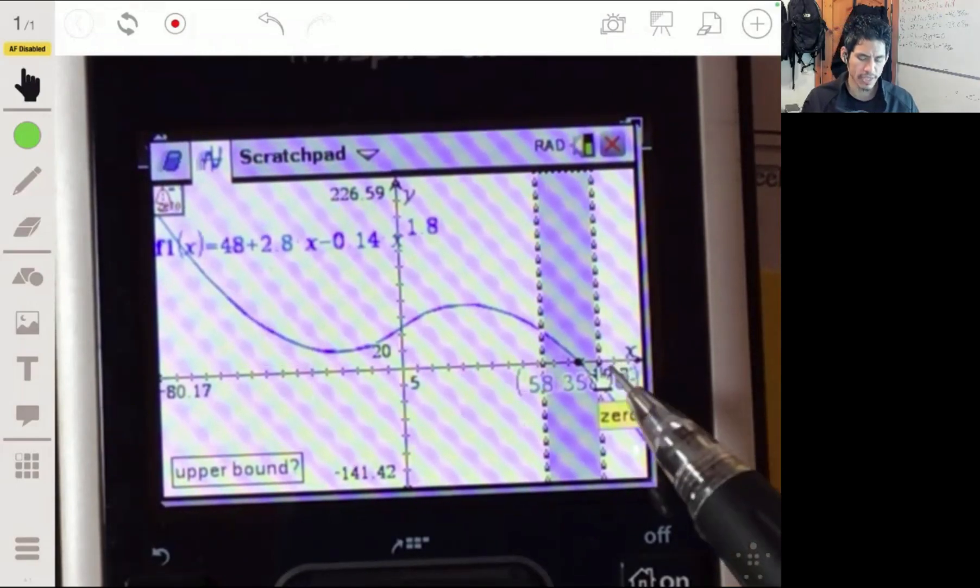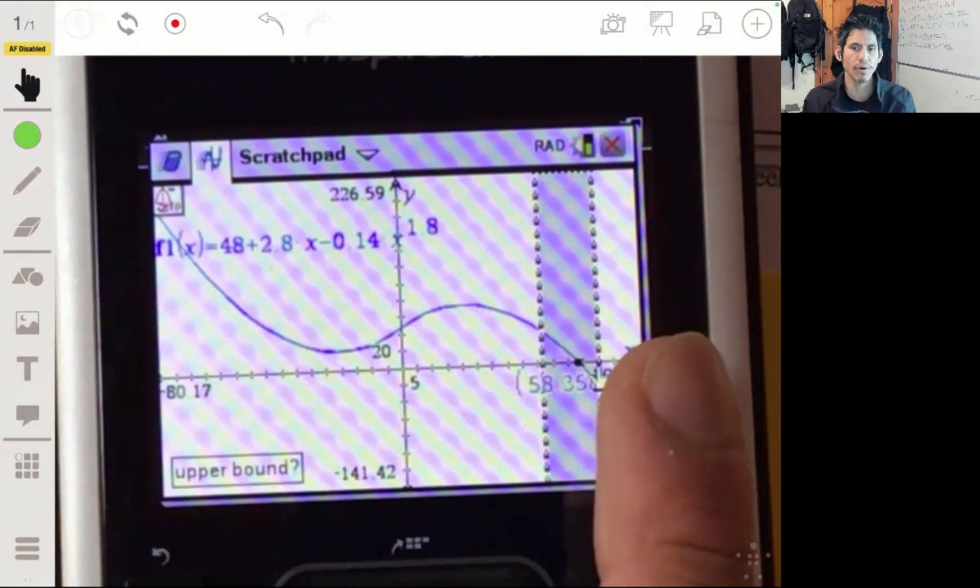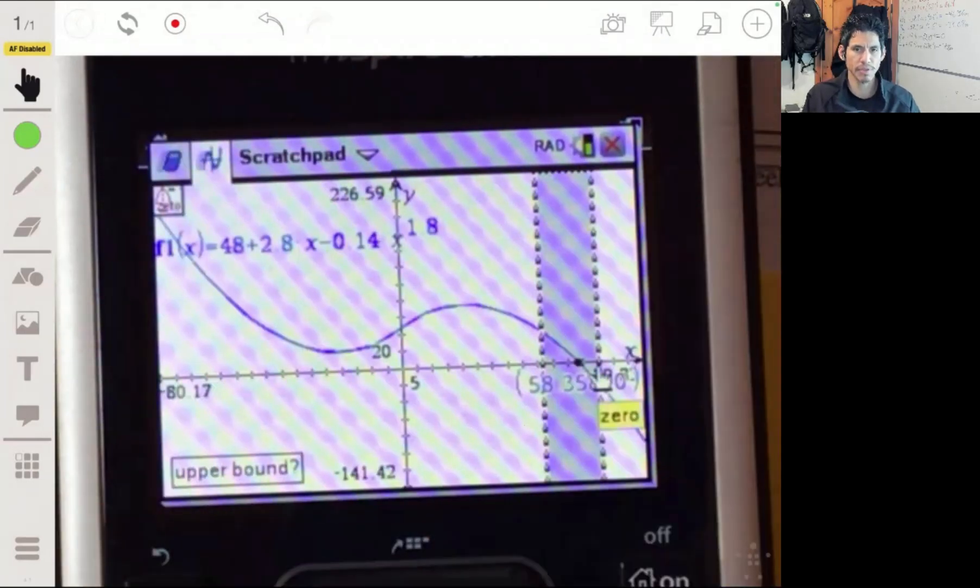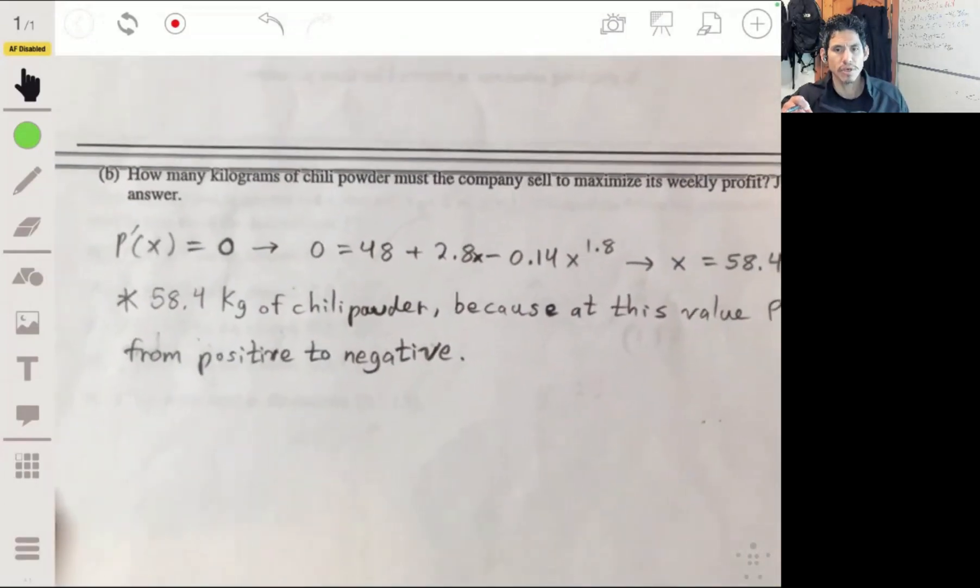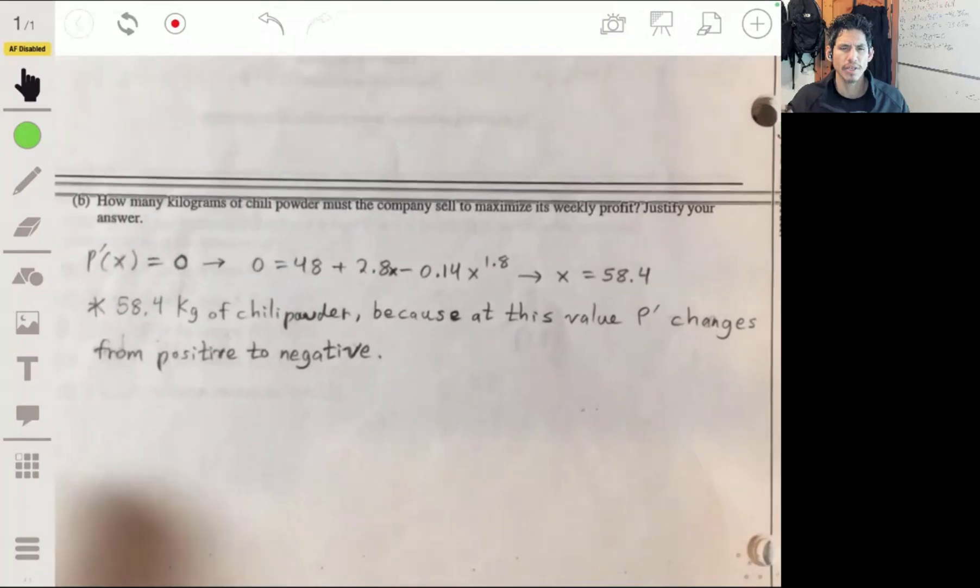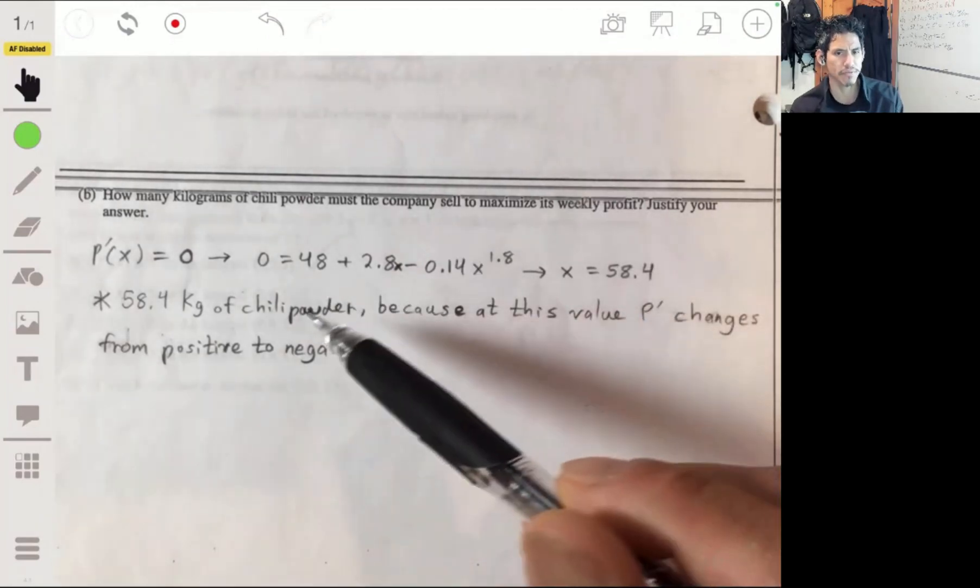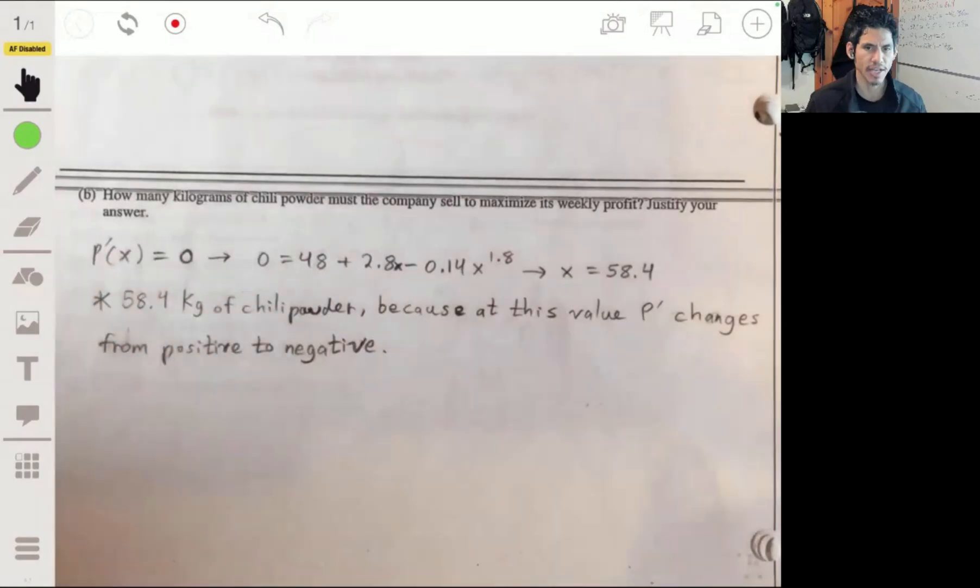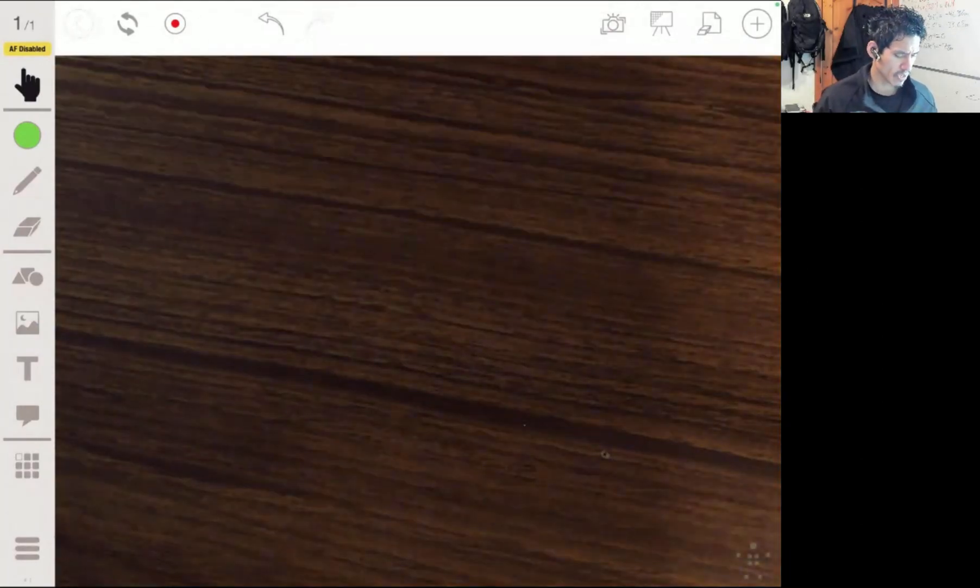That's where it's going to not be profiting anymore. You want to have it all up until that value because all of this is accumulating profit. As soon as we get past that point, we're losing money. You don't really even need to draw a graph. Just make sure you mention what you're looking at. I was looking at the sign of the derivative. Not necessarily the number, but when it changes from positive to negative.